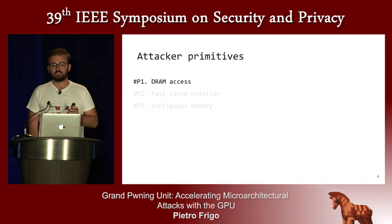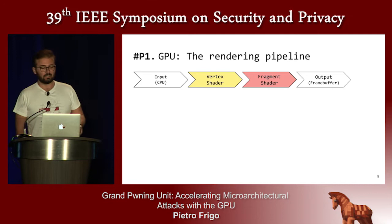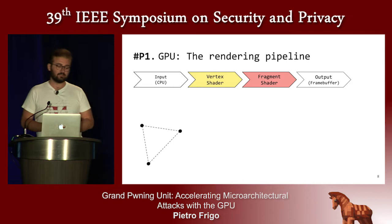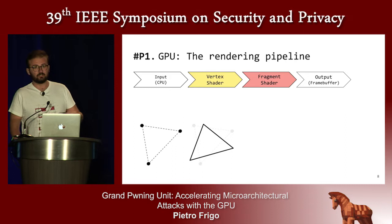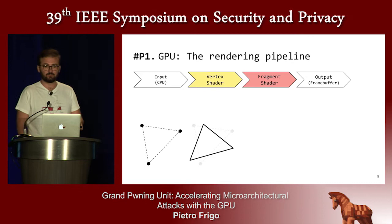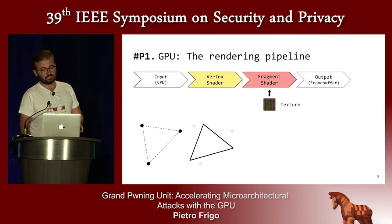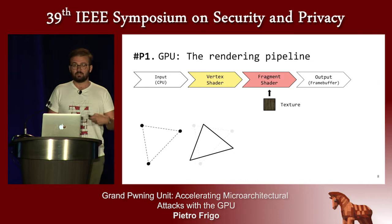To understand how we get DRAM access, we need to understand how the GPU works. The GPU aids the rendering pipeline, which runs in four main steps: the CPU provides vertices as inputs to the GPU; these vertices run through the vertex shader performing geometrical computations; at the end of the vertex shader you have a polygon — a grid of fragments (pixels inside the polygon); and then the fragment shader runs over every single pixel.